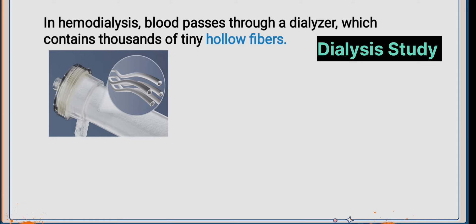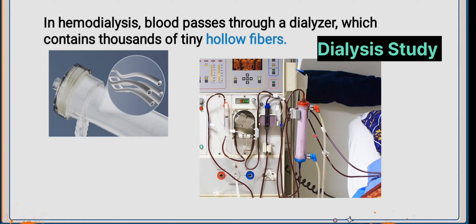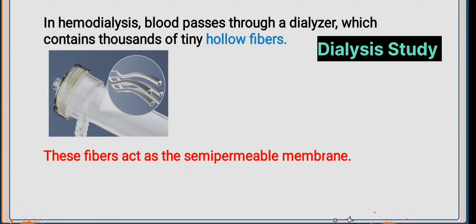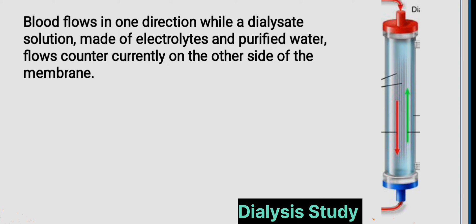In dialysis, blood passes through a dialyzer which contains thousands of tiny hollow fibers that work as semi-permeable membranes. Blood flows in one direction while dialysate solution flows counter-currently. Dialysate is made up of electrolytes and purified water.